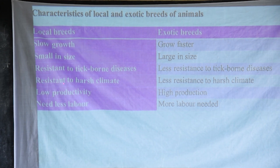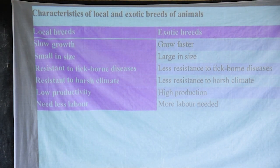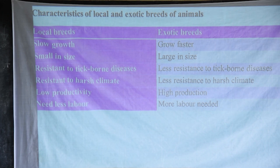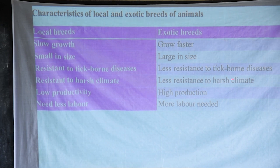Local breeds are also resistant to harsh climate — they can be reared in areas with strong heat, which is quite hard for other animals. But for exotic breeds, there is less resistance to harsh climate. They are not resistant and need a cool environment. If you are rearing exotic breeds, you need well-structured houses with good shelter to avoid harsh climate like strong sunlight and heat — you may even need air conditioning. Exotic breeds need a better environment than local ones.